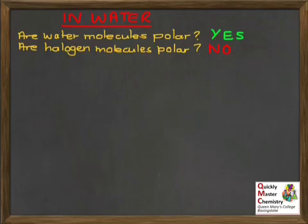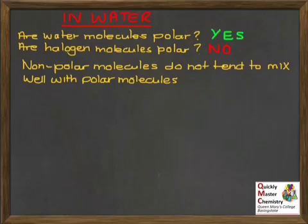How does this relate to solubility? The key idea here is that non-polar molecules, such as the halogens, do not tend to mix well with polar molecules, such as water. And so halogens, for this reason, have low solubility in water.